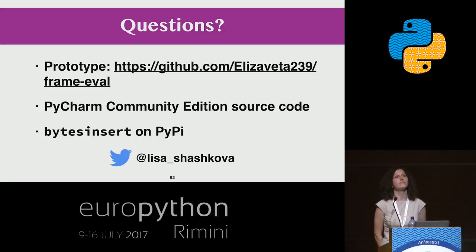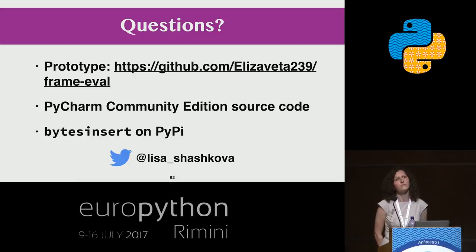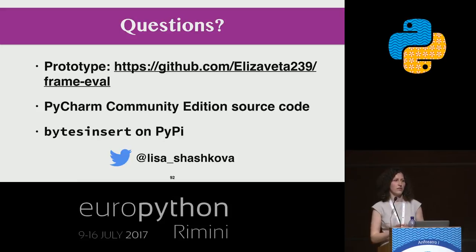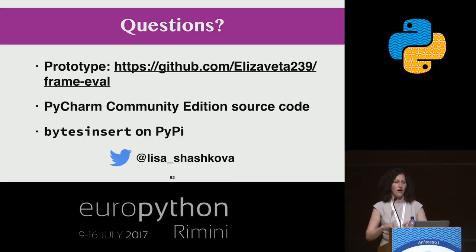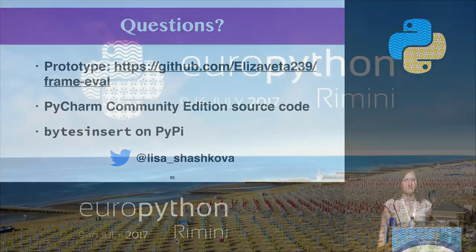Q: You invited people to create new use cases — what happens if everybody writes to co_extra? A: There is a mechanism in the frame evaluation API for multiple users of co_extra. When you use co_extra, you access it by index. You register the number of usages so different systems don't intersect — they are stored separately. Thank you very much.